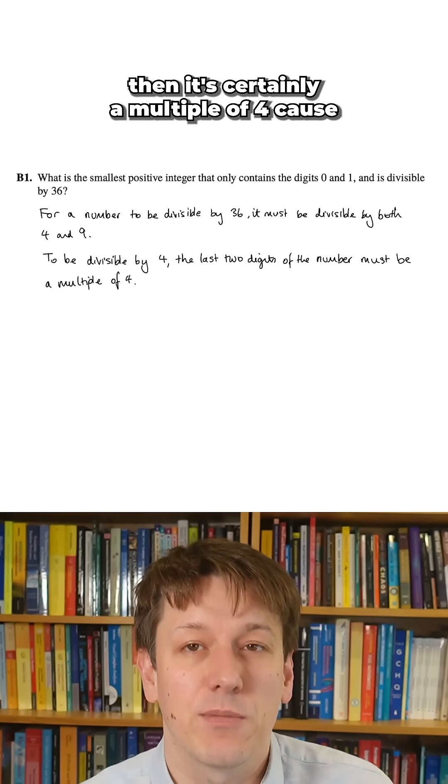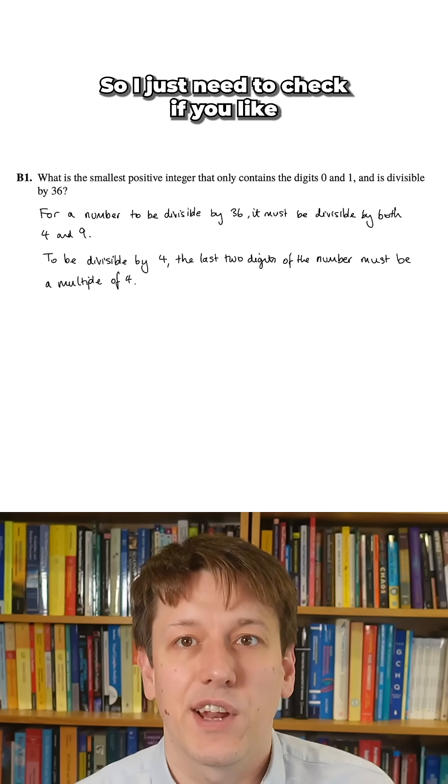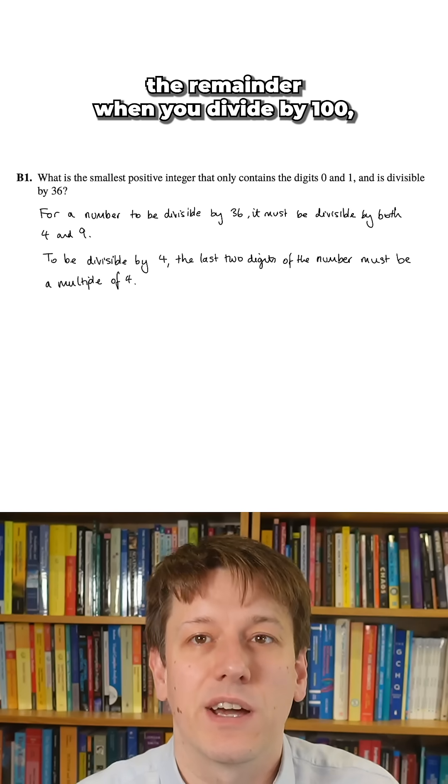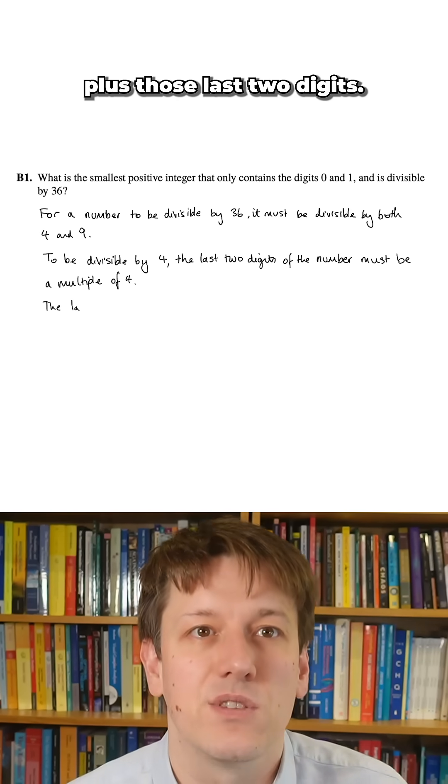So I just need to check the remainder when you divide by 100 - the last two digits of the number - because it's going to be some number of hundreds plus those last two digits.